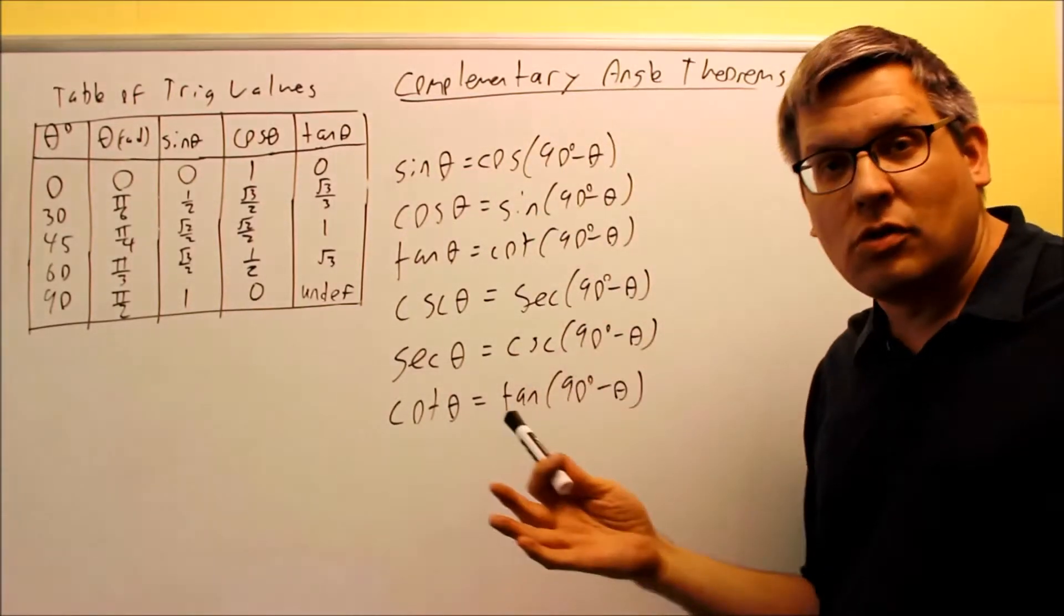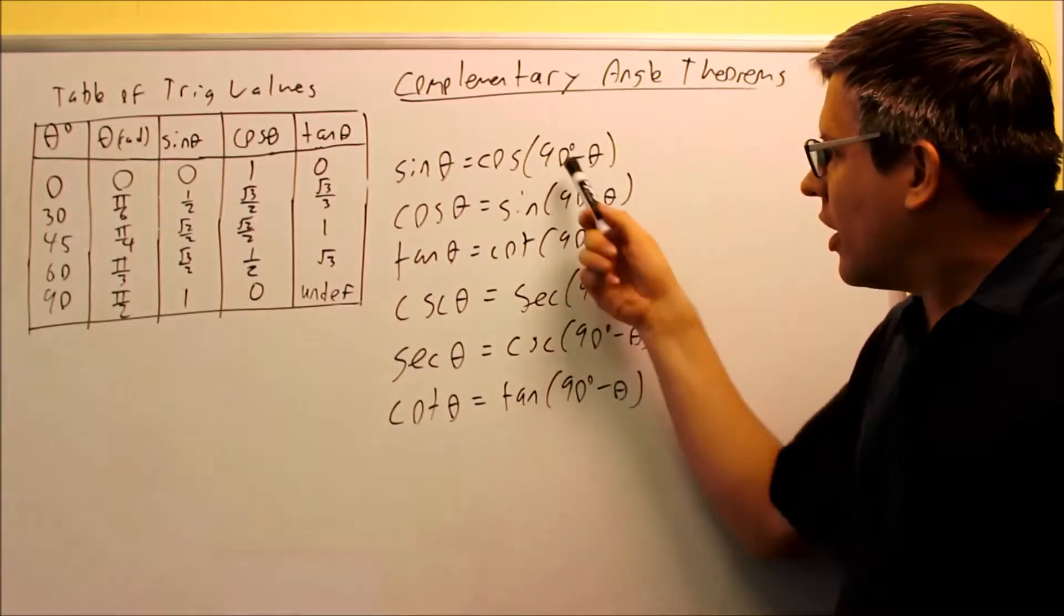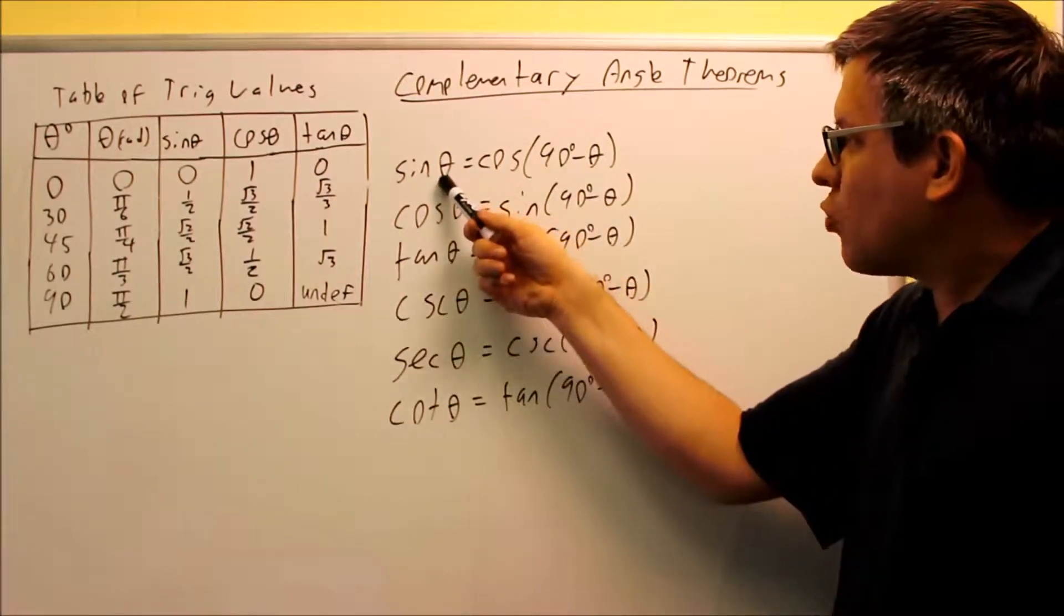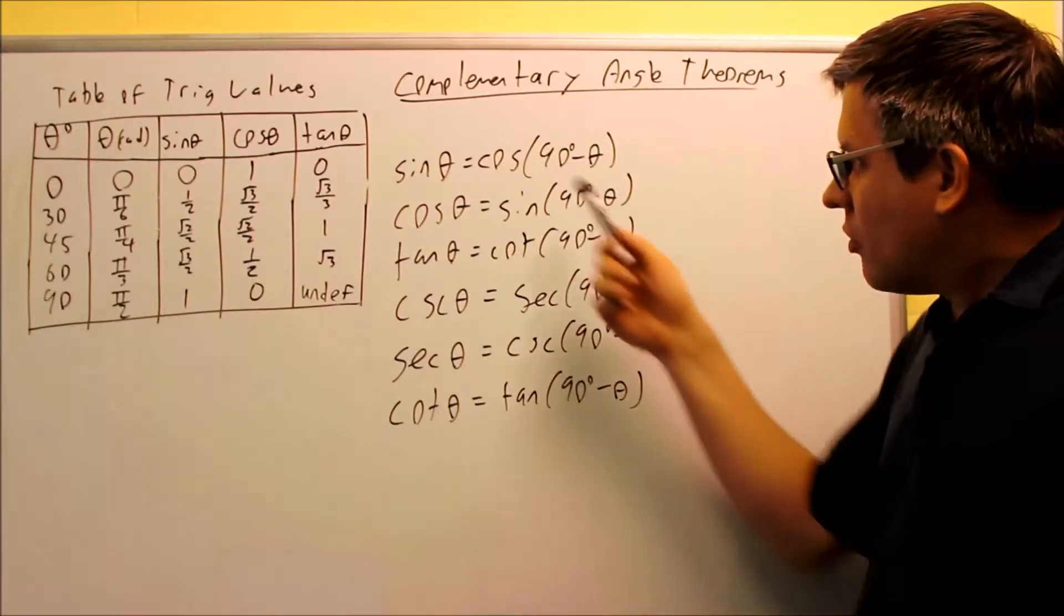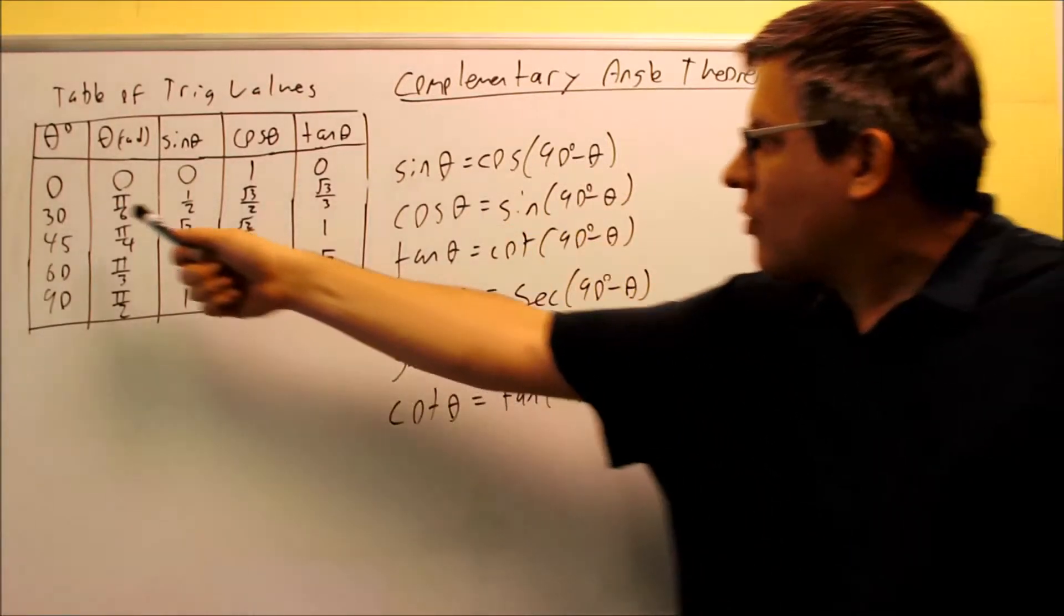Complementary angles means they add up to 90 degrees. So that's why inside here, if theta is one angle, then 90 minus theta would be the other angle.